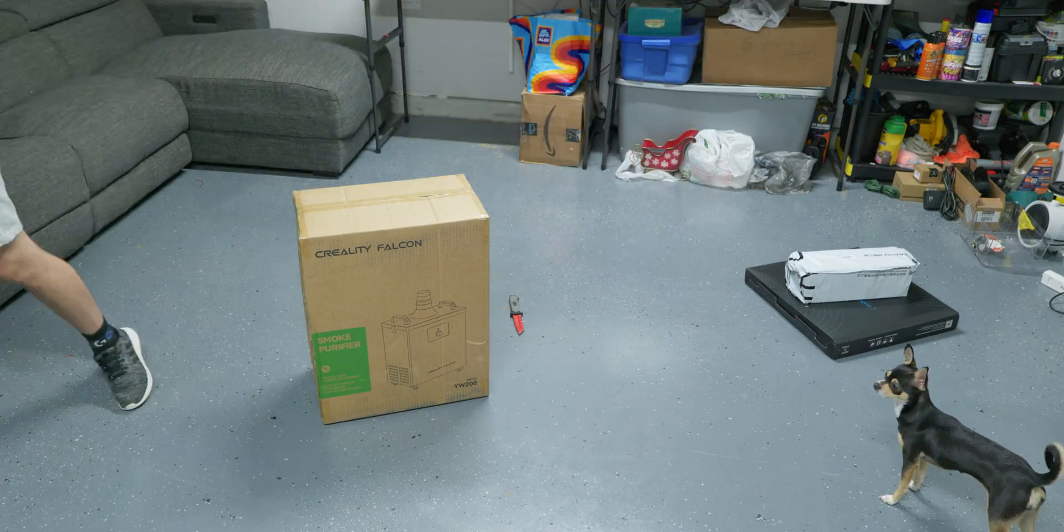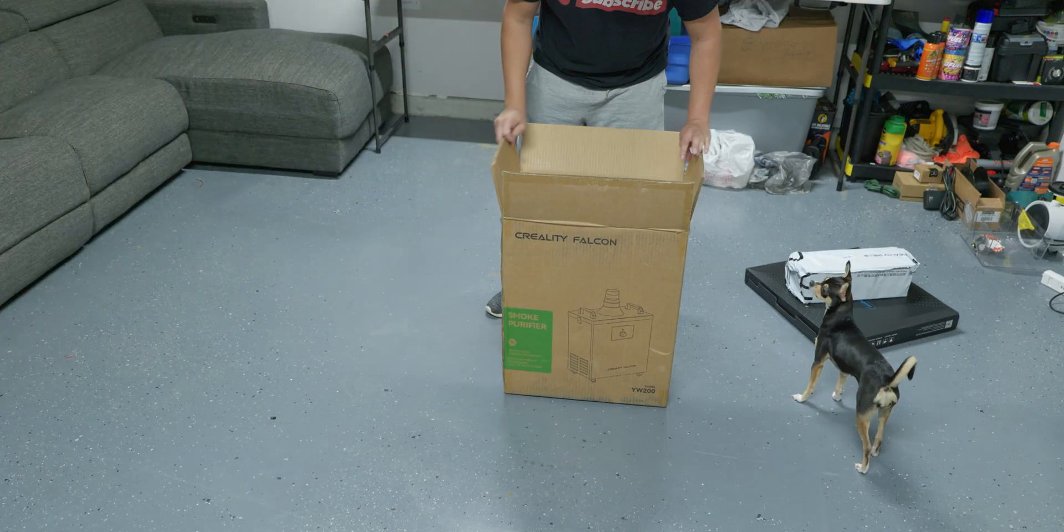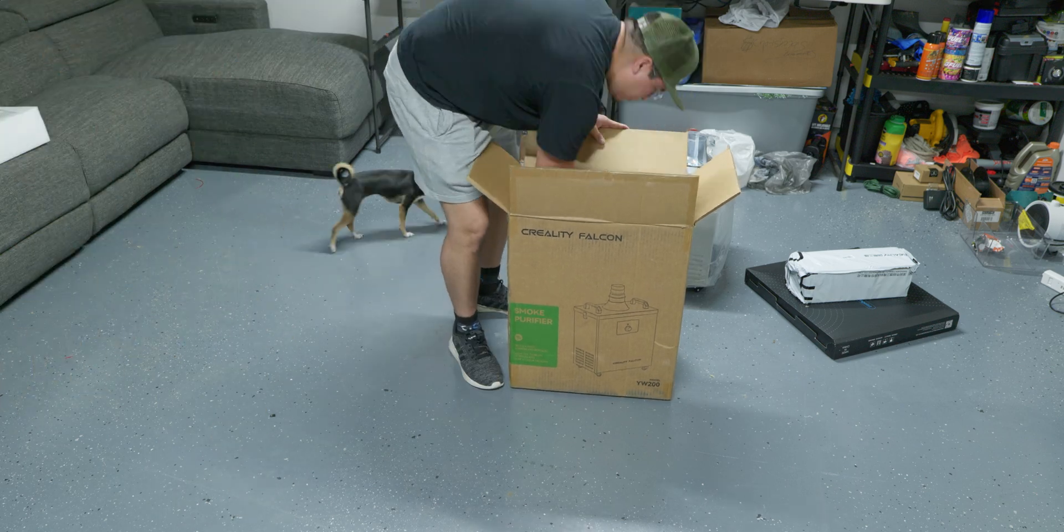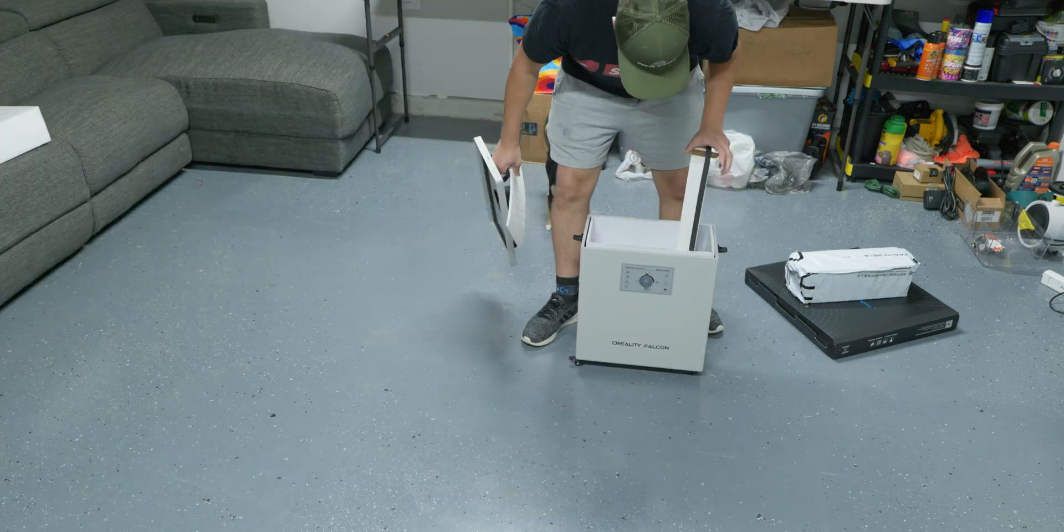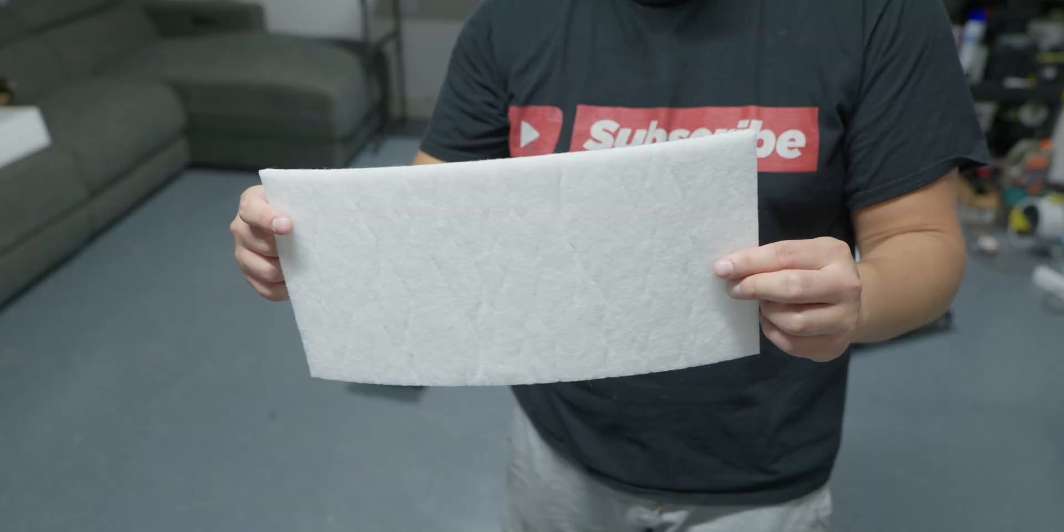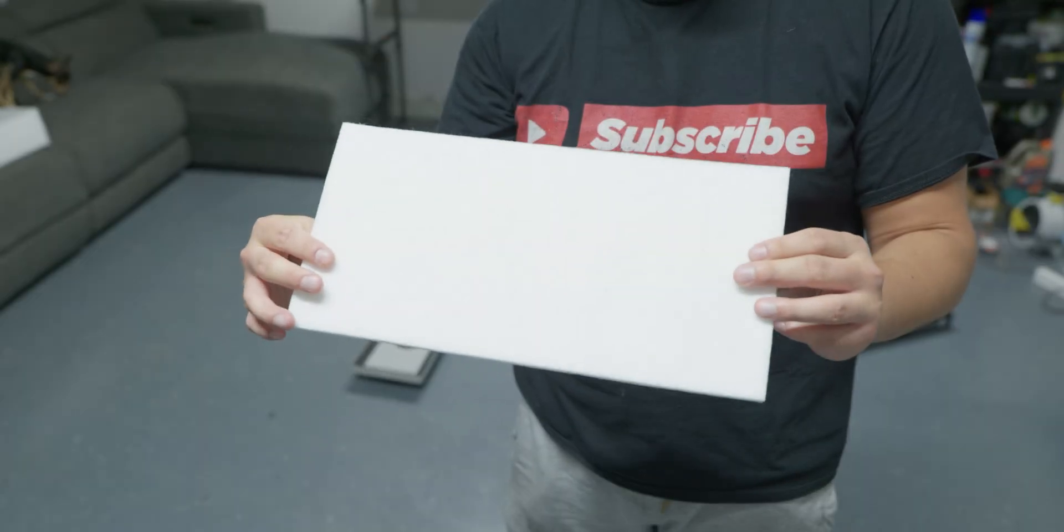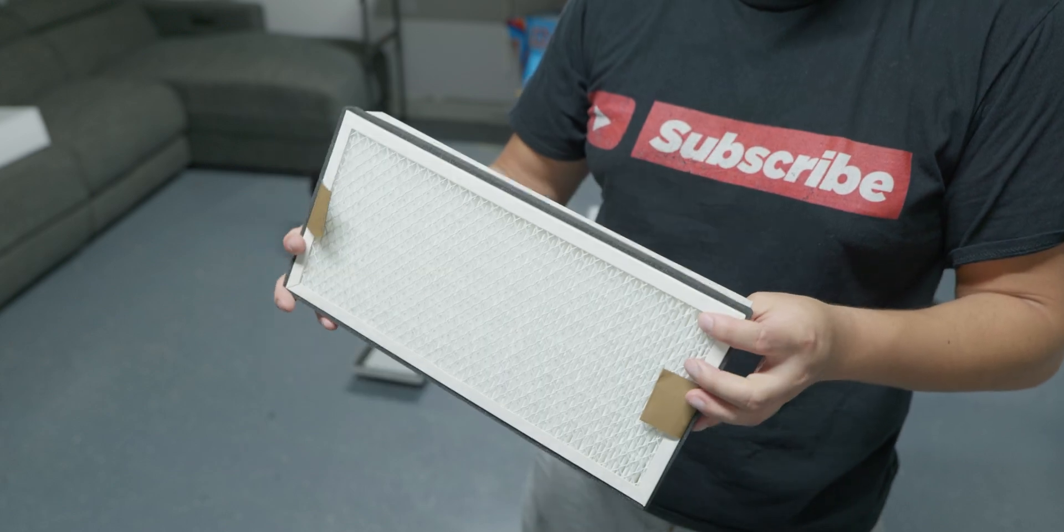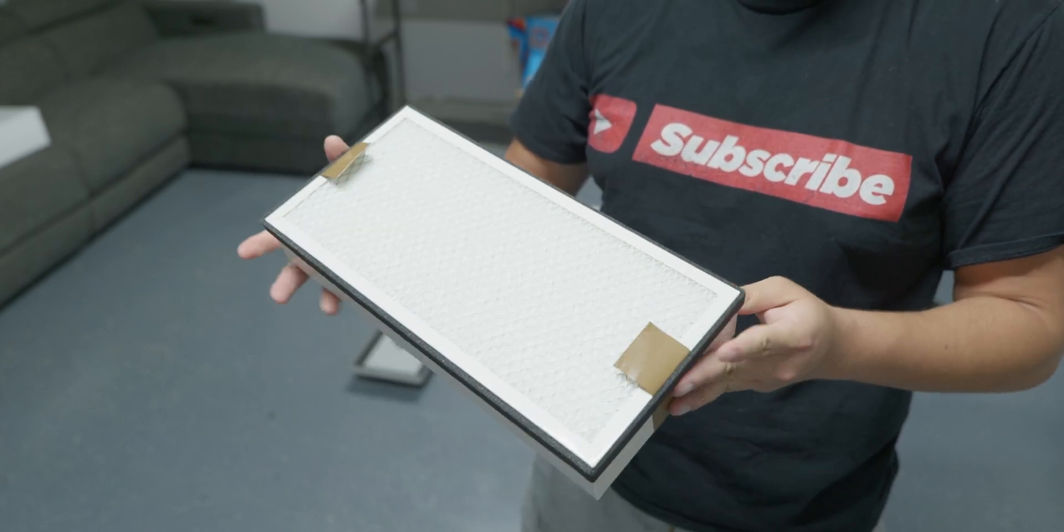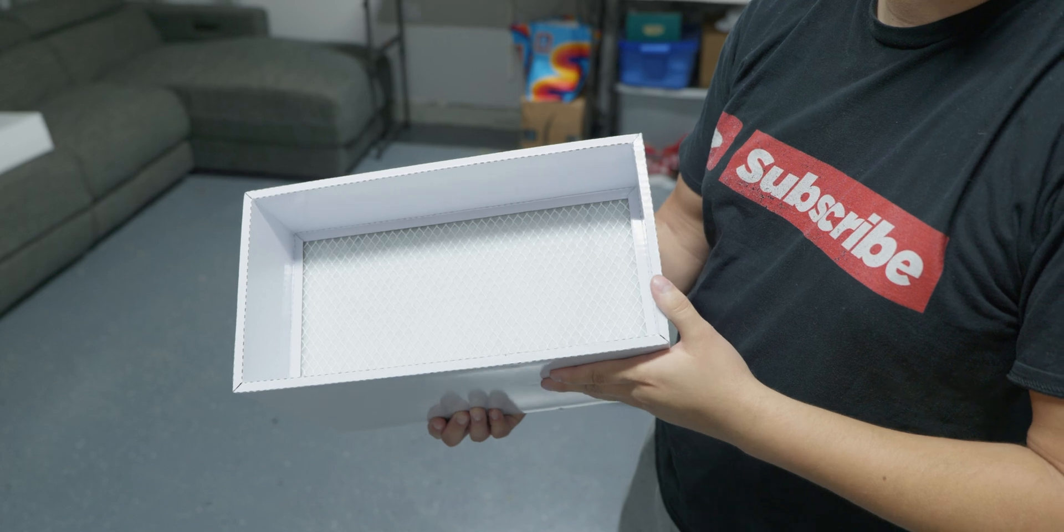Diving into the unboxing and setup process, everything arrived in its own individual packaging and was well protected with nothing damaged. The smoke purifier was pre-assembled, and smoke goes through three types of filters: the pre-filter for larger particles, the efficient filter capturing up to 99.98% of particles, and the activated carbon filter for harmful gases and odors.